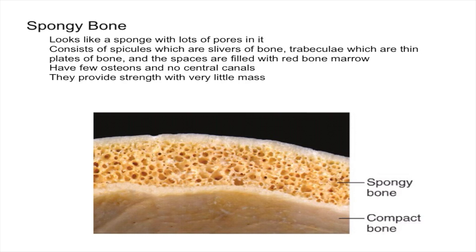The bone marrow fills up the open spaces between the trabeculae. It's important to remember that spongy bone does not have blood vessels, but everything surrounding the spongy bone is full of capillaries. This allows nutrients and other things to transfer easily from the blood to bone tissue. Also, spongy bone has very few osteons and no central canals, because the osteocytes are never really far from the marrow space and so they don't really need them.